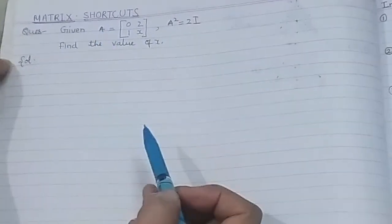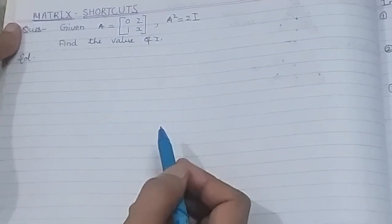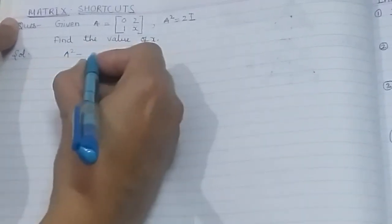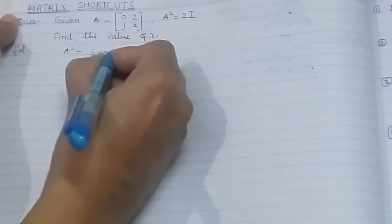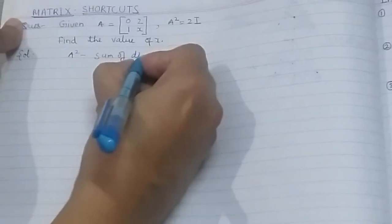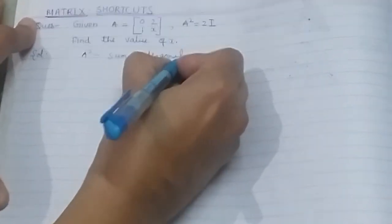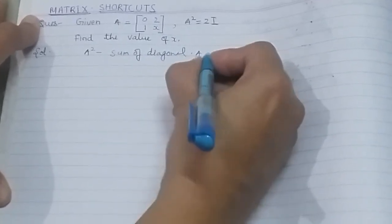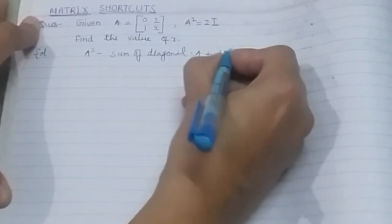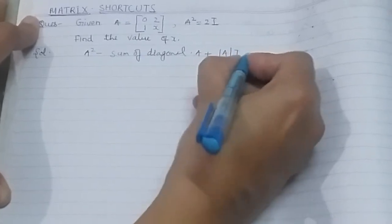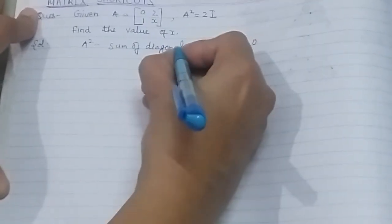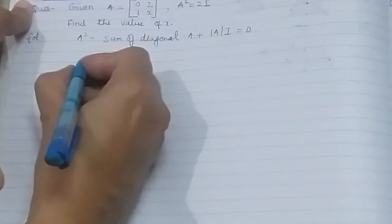I will be using a shortcut trick. The trick is: A² minus sum of diagonals times A plus determinant of A times I equals zero. I will be using this trick.